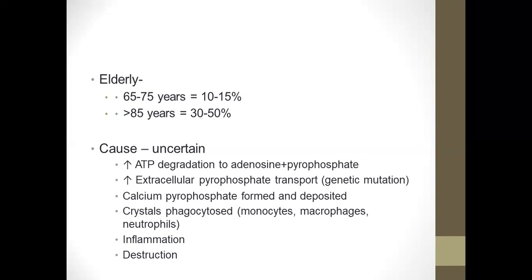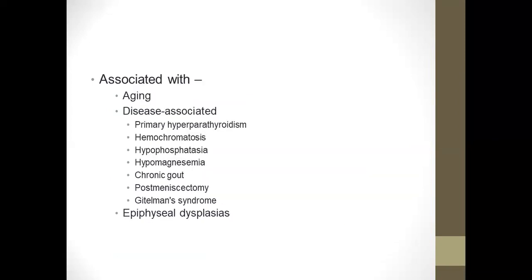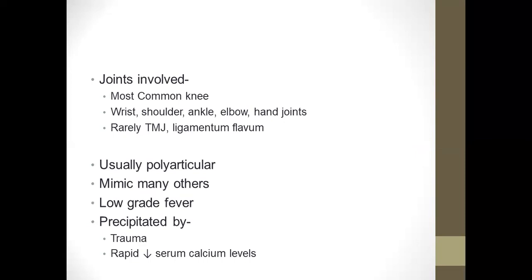It can be associated with aging and is associated with certain diseases like primary hyperparathyroidism, hemochromatosis, hypophosphatasia, hypomagnesemia, even chronic gout sometimes, post-meniscectomy, Gitelman's syndrome, and with epiphyseal dysplasia. The joints most commonly involved include larger joints: knee, wrist, shoulder, ankle, and elbow. It's usually polyarticular and may mimic other arthritides.